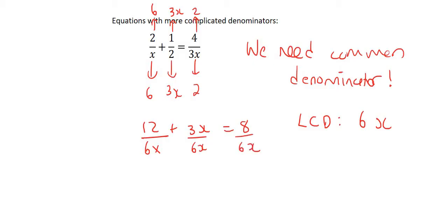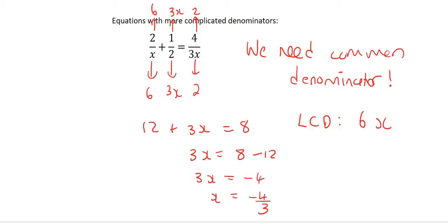However, when you have an equation, the denominators do not need to be there once you've made them the same. And so this is where we are now at. We can simply solve. So 3x equals 8 minus 12. This means that 3x is negative 4, and that means that x is negative 4 over 3.